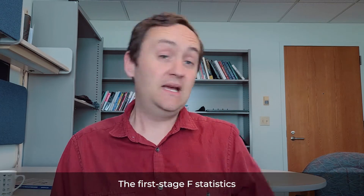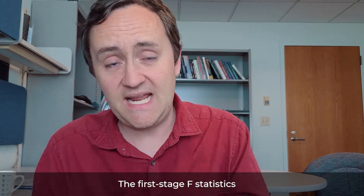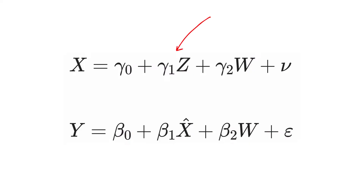So how can you test whether the instrument is actually a good predictor of your treatment? The most common way is by checking the first stage F-statistic. This looks at that first stage from two-stage least squares and performs an F-test of the joint significance of your instruments — whether gamma one is zero or not. If you have multiple instruments, it tests whether all the coefficients on all your instruments are zero at the same time. The bigger your F-statistic is, the better a job your instruments are doing at predicting your treatment.